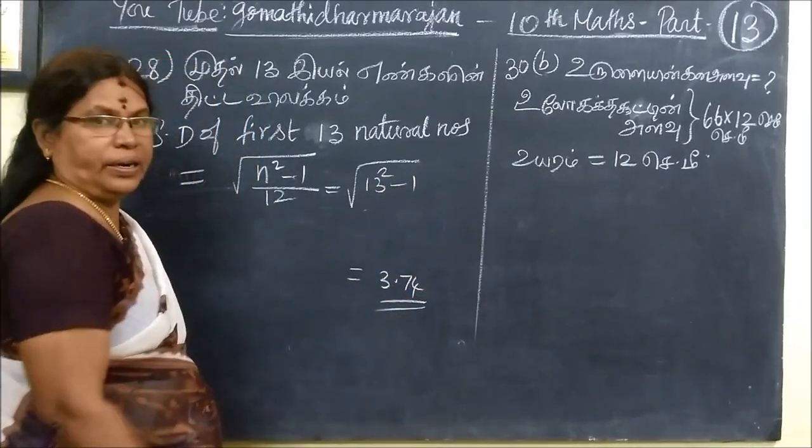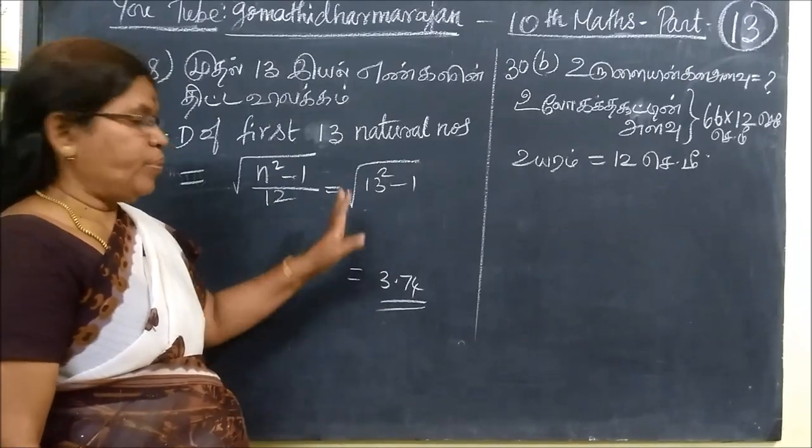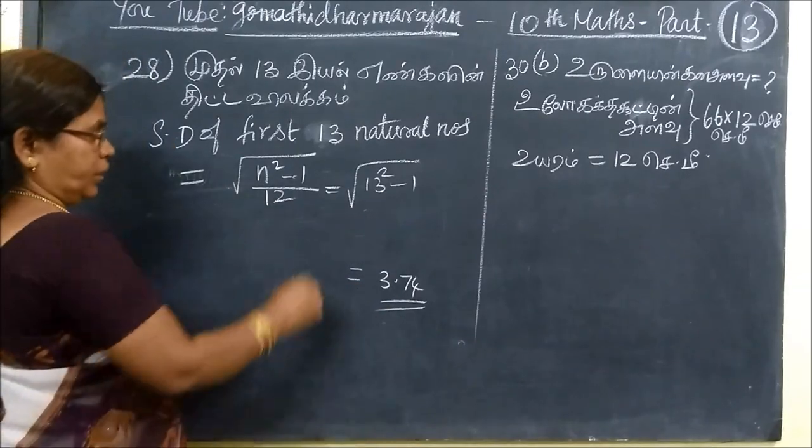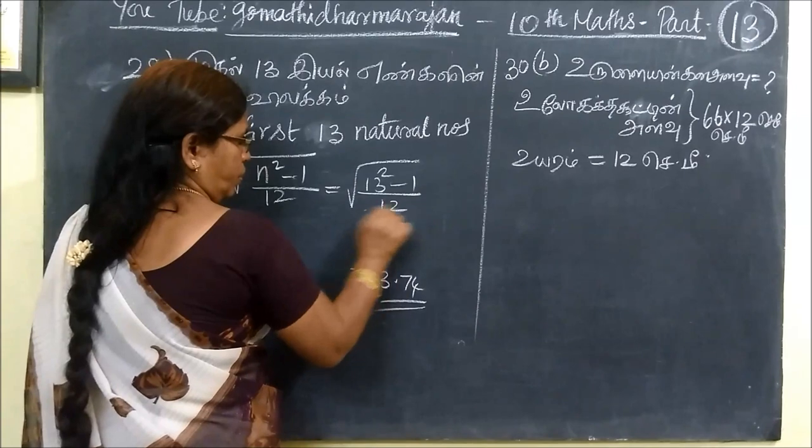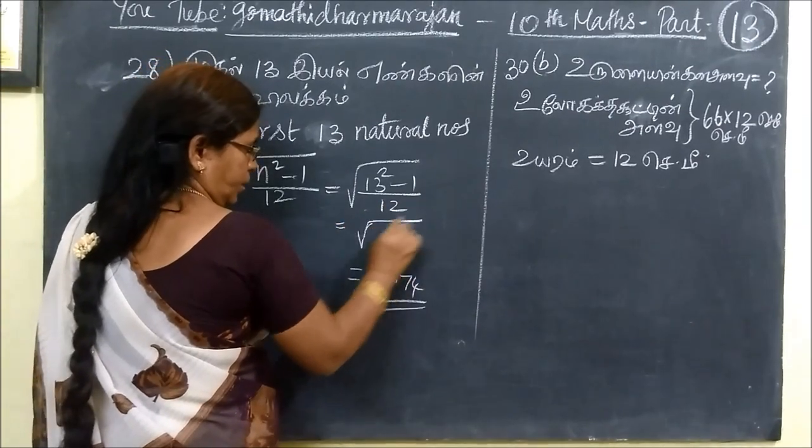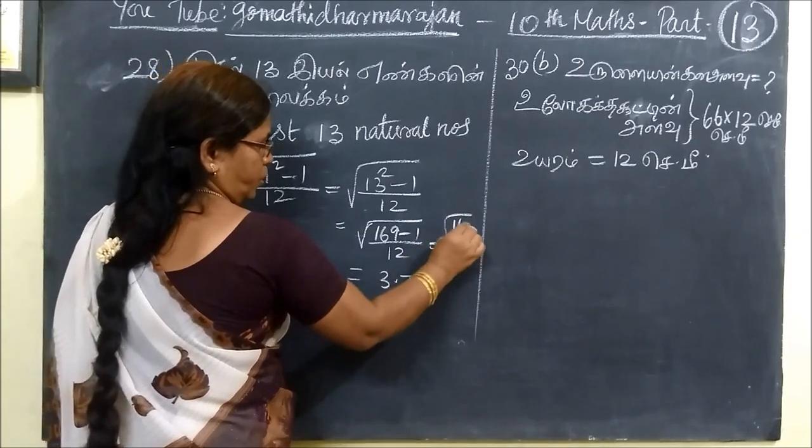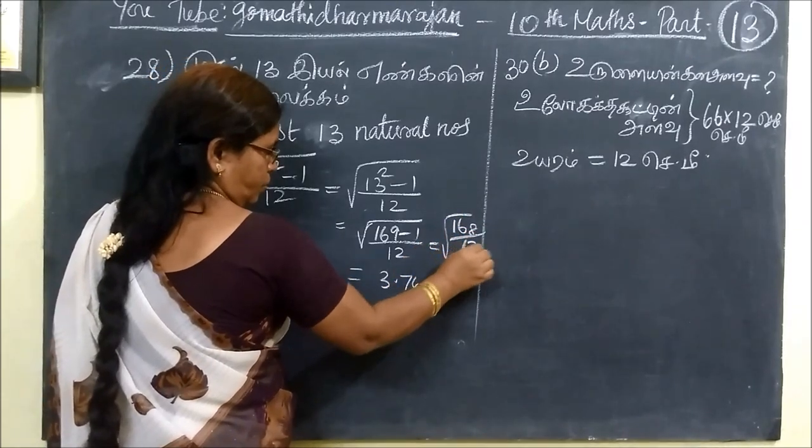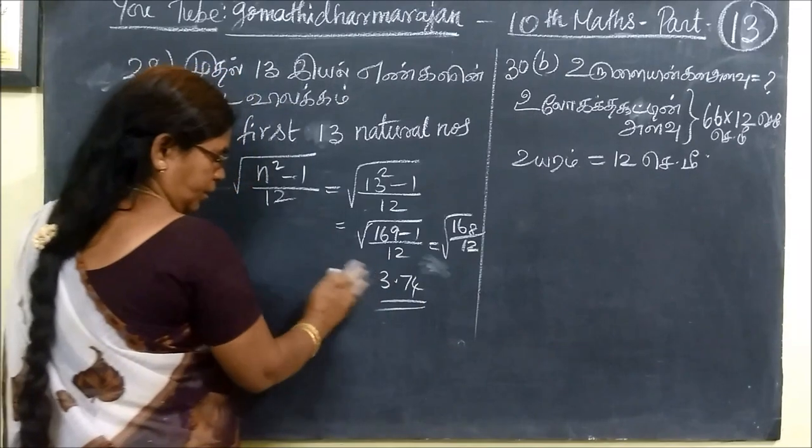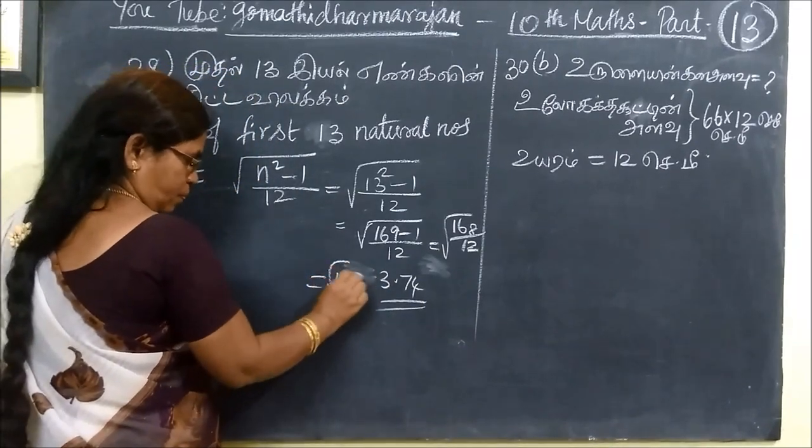This will be root of 13 times 12. This will cancel, this root is 4. It equals root of 156.